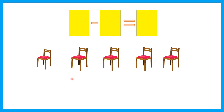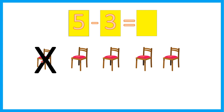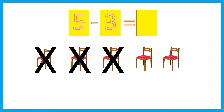What about this one? How many chairs? 1, 2, 3, 4, 5. Five chairs minus three. So we take away three objects. Let's cross out three. 1, 2, 3. How many left? 1, 2. That's right.